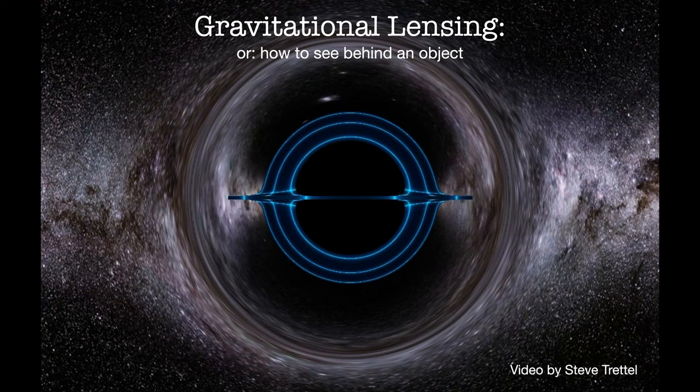To find out, let's look at this other simulation by Steve Trettel. This is modeling an accretion disk around the black hole. An accretion disk is formed when a spinning cloud of dust and gas interacts with the gravitational field of a massive object.